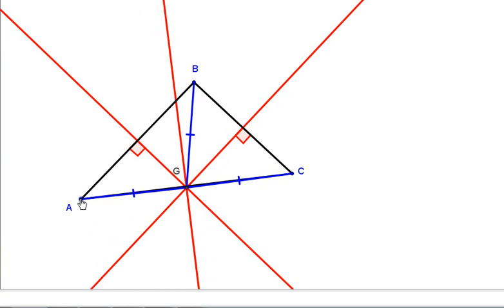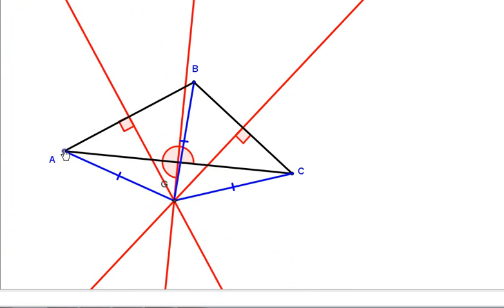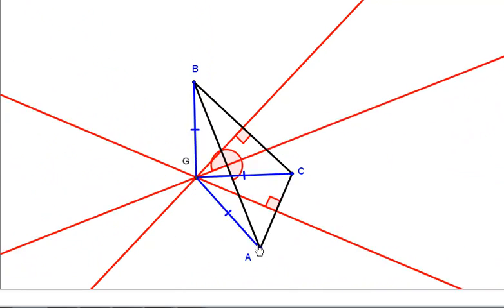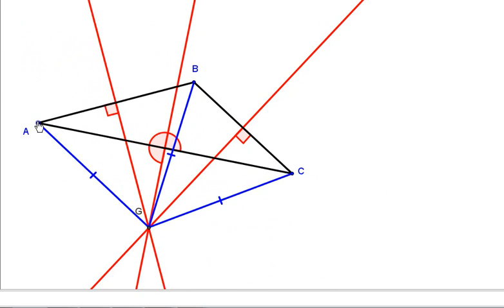even if it's a right triangle, if it's obtuse, if it's acute, the point G is always equidistant from A, B, and C.